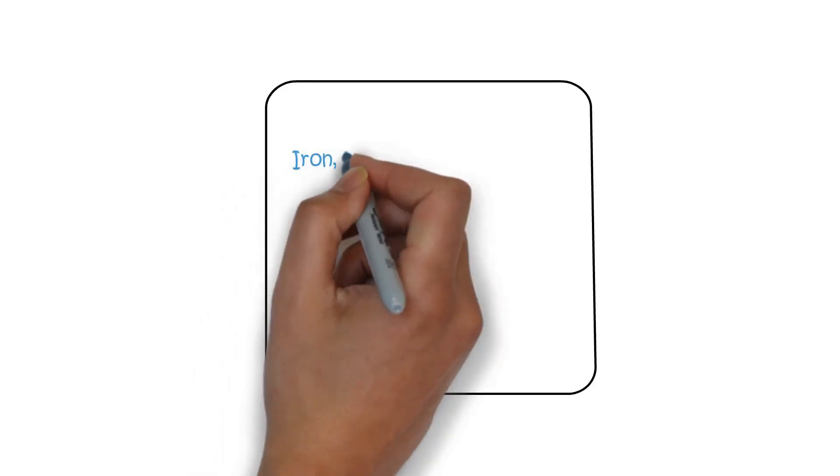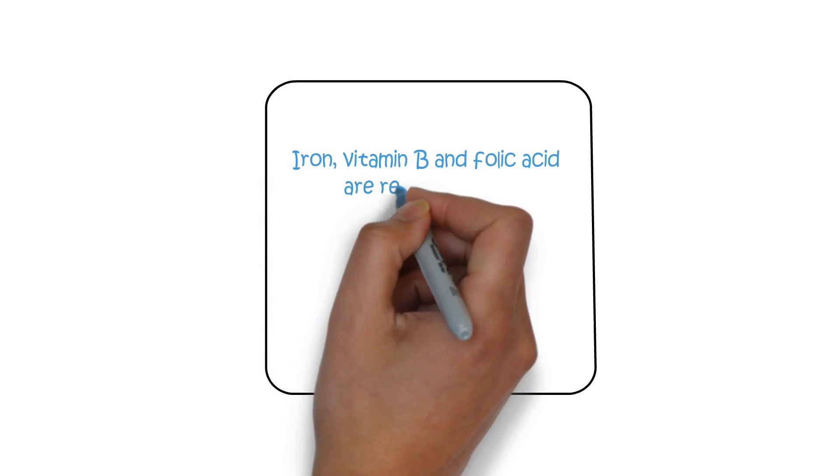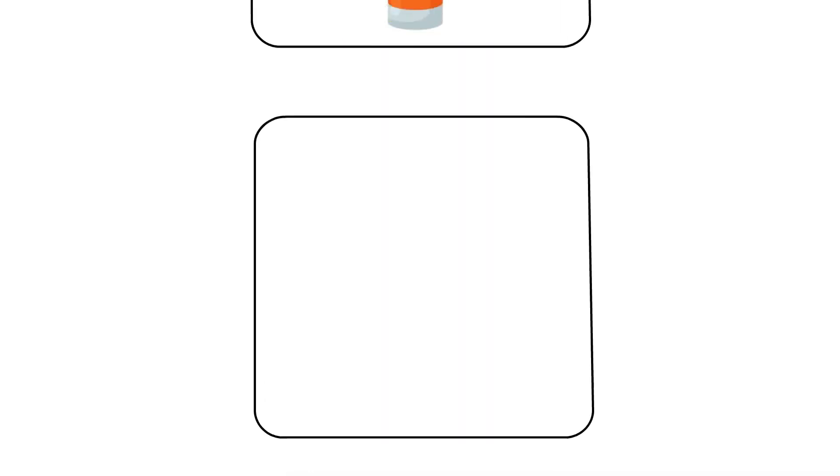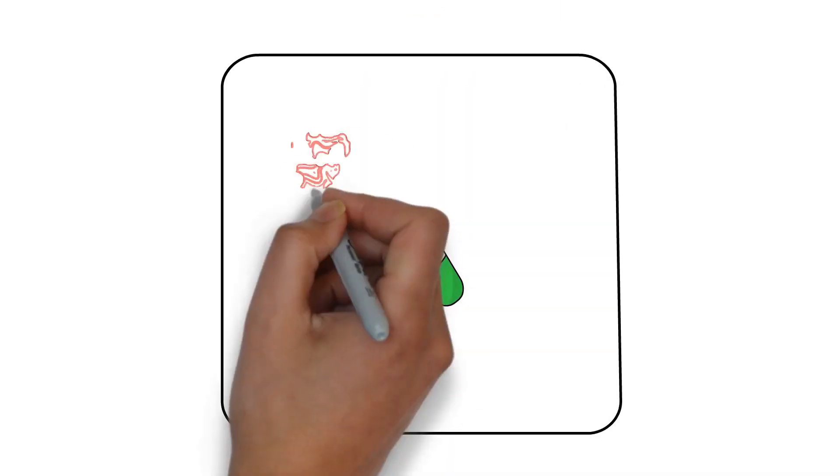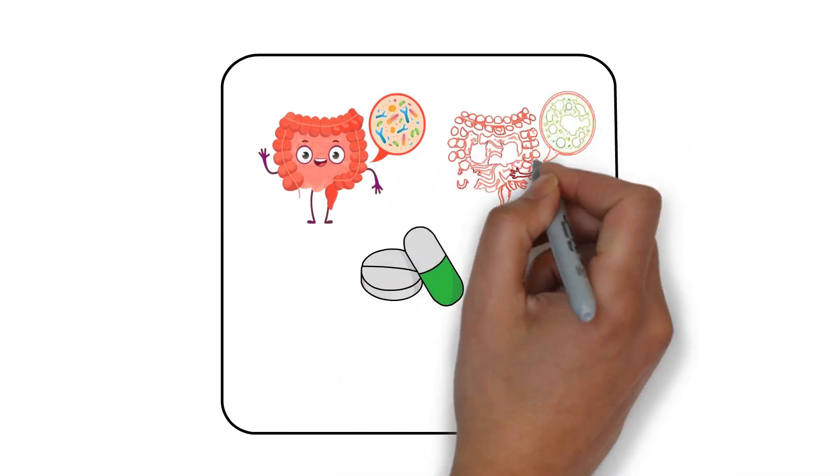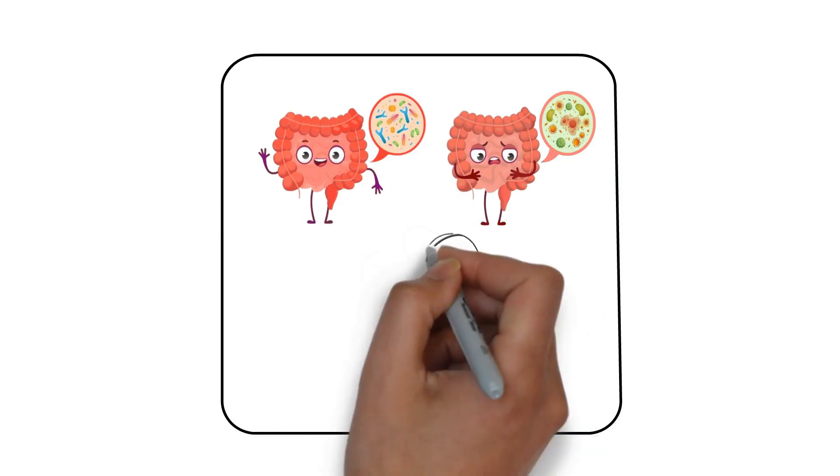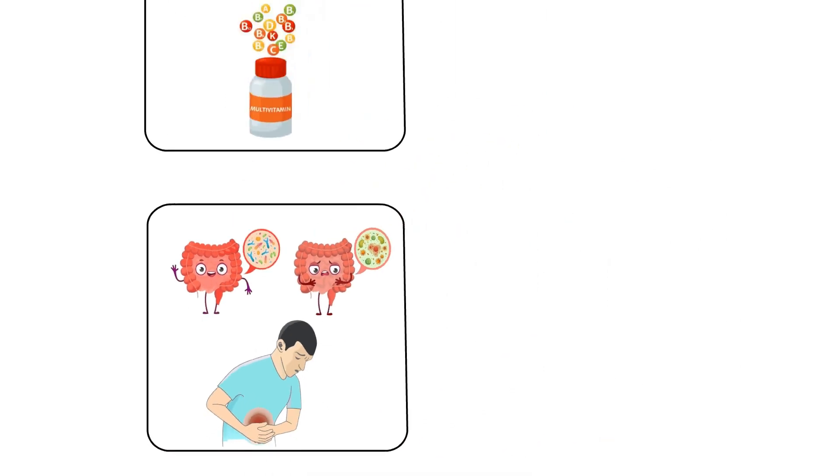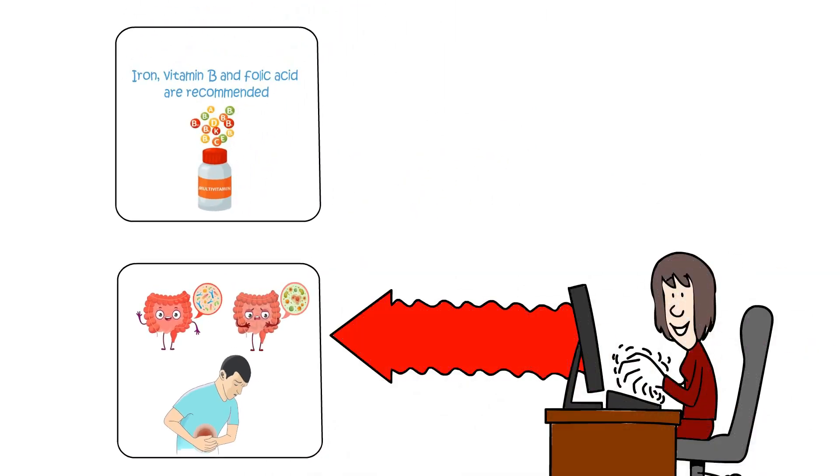Multivitamins including iron, vitamin B, and folic acid are recommended. Probiotics are supplements that contain good bacteria which is healthy for the gut. These bacteria can help reduce the bad bacteria and hence reduce chances of a flare-up. Further research is still required to clarify the specific role of probiotics.